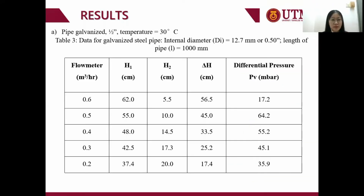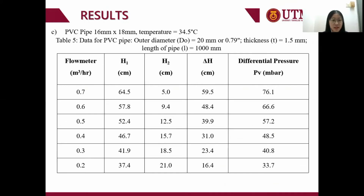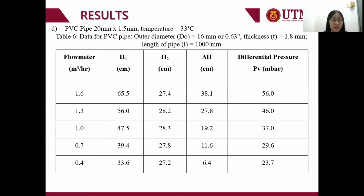Lastly, after finishing, all manometer tubes are removed, the gas valve is closed, and the pump and main switch are turned off. This is the result for the galvanized steel pipe at temperature 30°C, the copper pipe with dimensions 18 mm × 1 mm at temperature 32°C, the PVC pipe with dimensions 16 mm × 1.8 mm at temperature 34.5°C, and the PVC pipe with dimensions 20 mm × 1.5 mm at temperature 33°C.